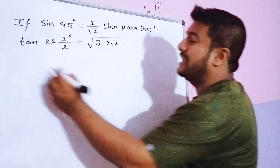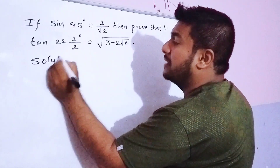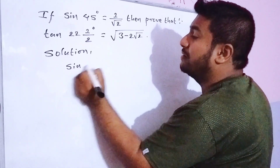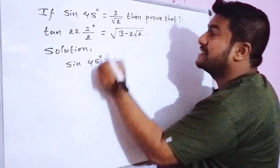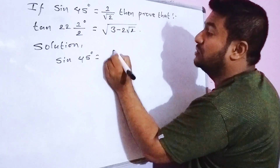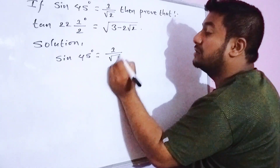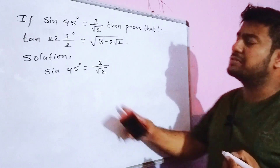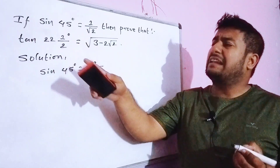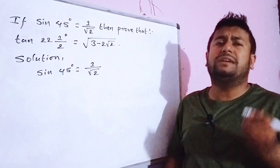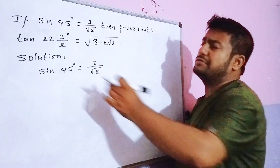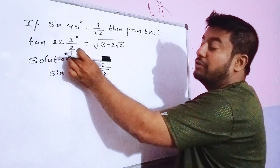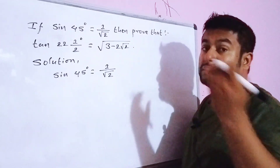Now I am going to take the sin 45 degree value. Sin 45 degree is equal to 1 by root under 2. Then sin 22 and 1/2 degree — we need to find the value of this.